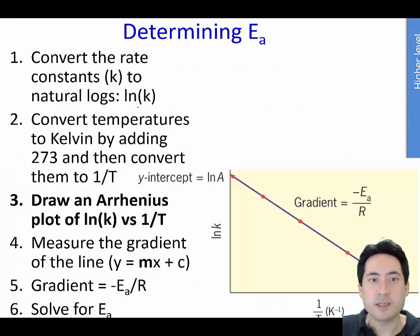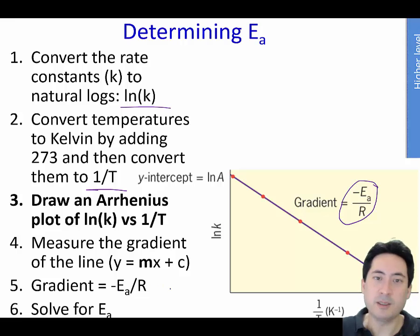So these are the steps. Take the natural log of the rate constant on the y. Take the inversion of temperature on the x. That will then give you the curve and then the gradient is equal to negative Ea over R, R being the gas constant.